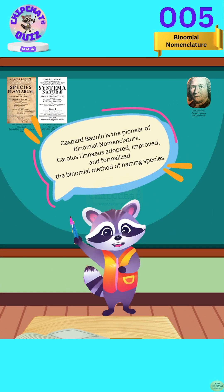Gaspard Bauhin is the pioneer of binomial nomenclature. Carolus Linnaeus adopted, improved, and formalized the binomial method of naming species.